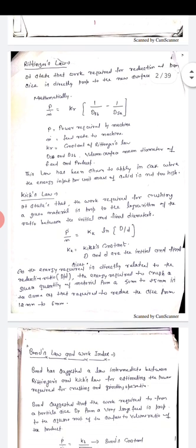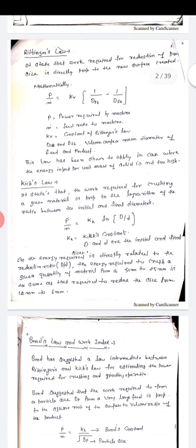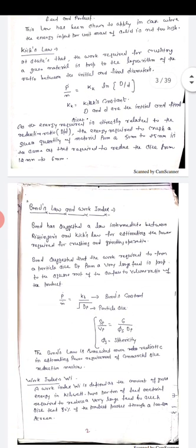So according to Rittinger's law, P upon M dot equals to KR 1 upon DSB minus 1 upon DSA. Students, A is for initial and B is for final. A-B-C-D-ing meh pehle A aata hai toh A hum here peh feed ke liye lenge and B lenge hum product ke liye. P is for power, M dot is mass flow rate of feed, KR is the Rittinger's constant. Now here DSB and DSA are the diameters, Rittinger's means final diameter and initial diameter and they are always in meter.